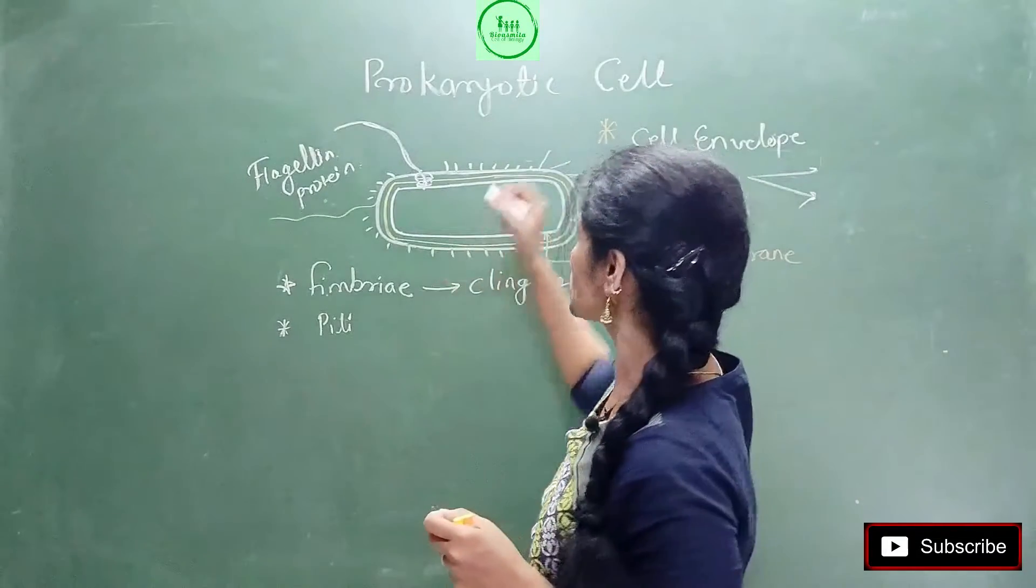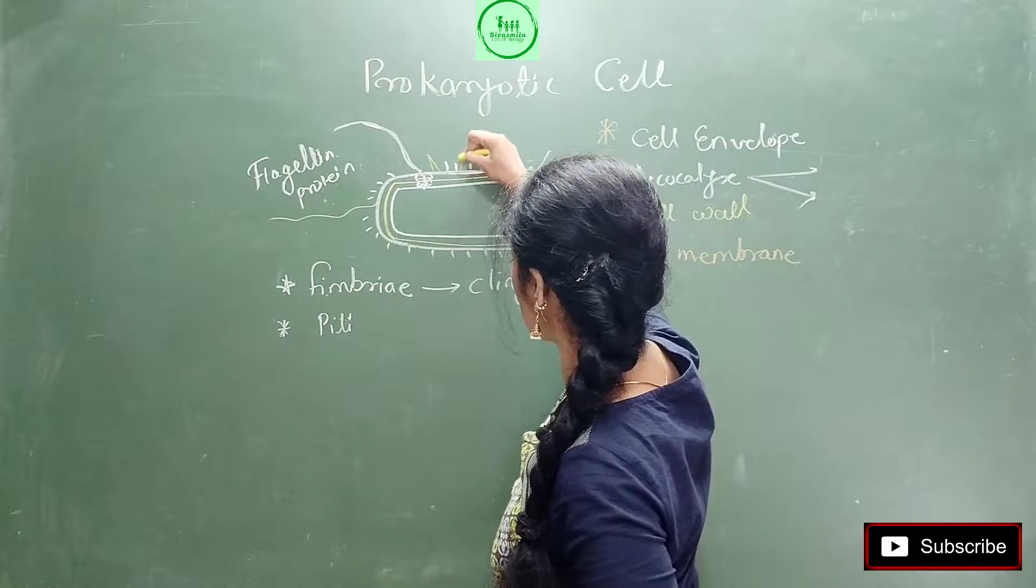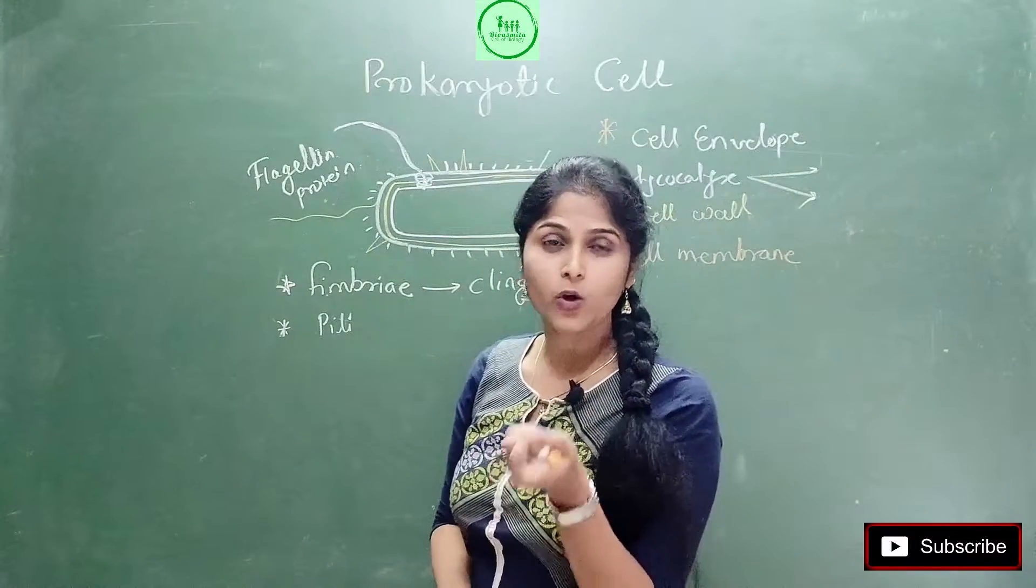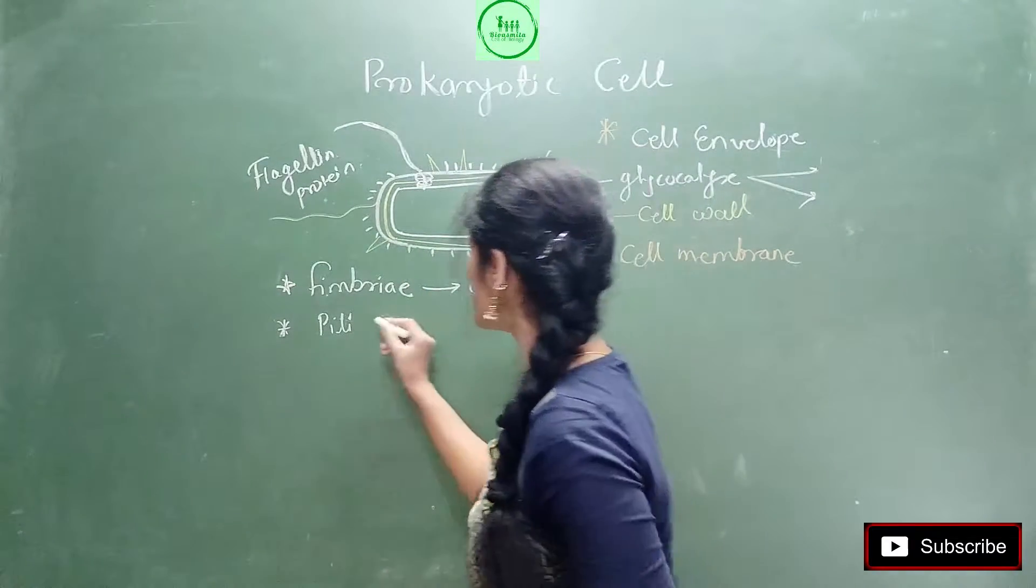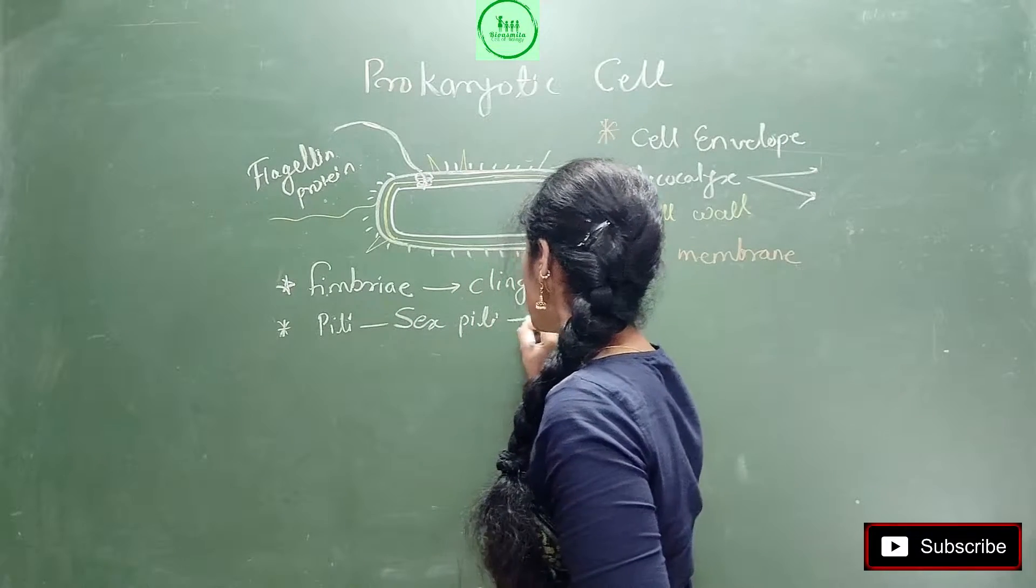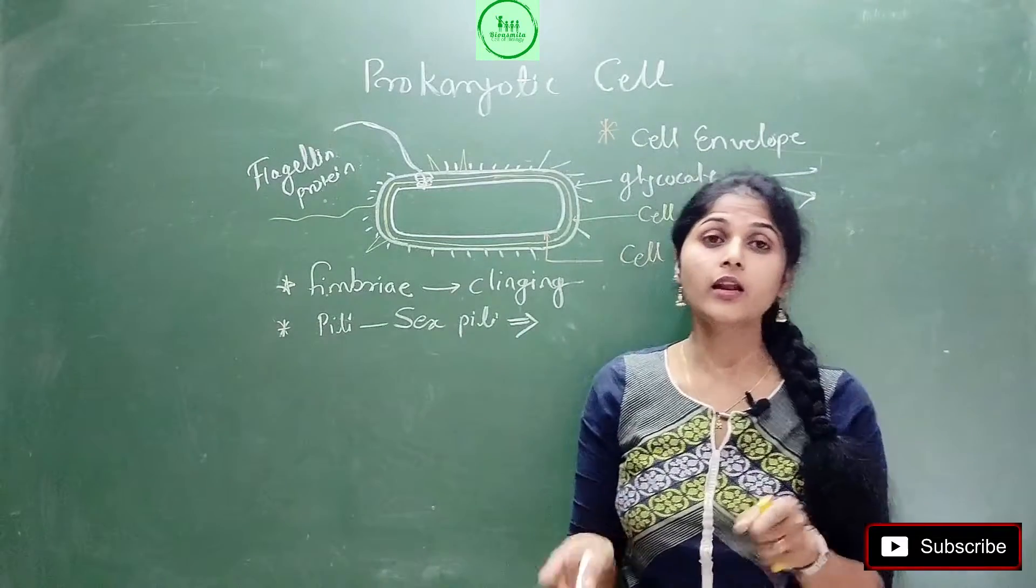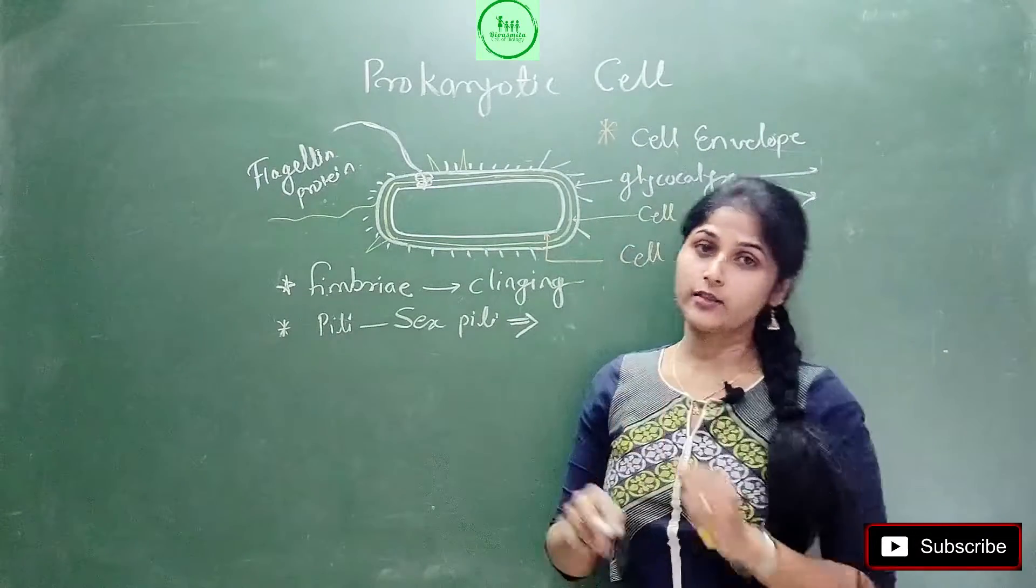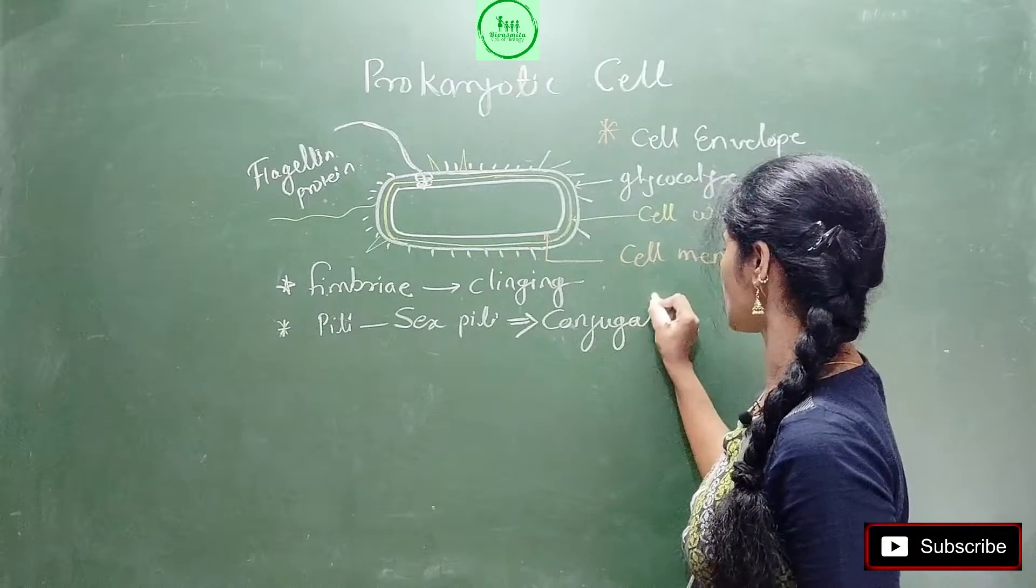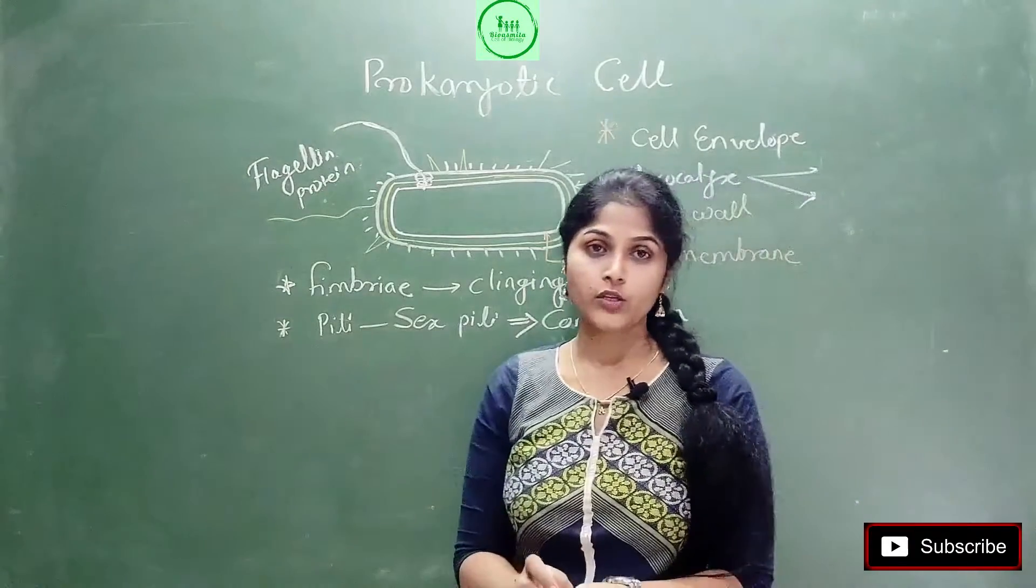There is the presence of another thread-like structure which is a bit pointed. This structure is called pili, and pili can also be present. More specifically, we can say it's a sex pili.